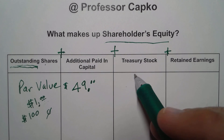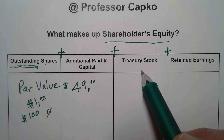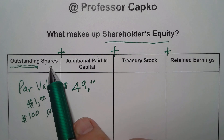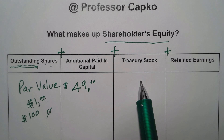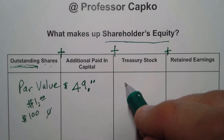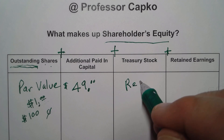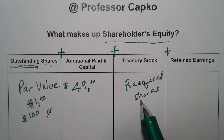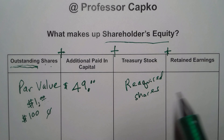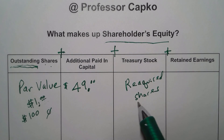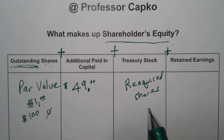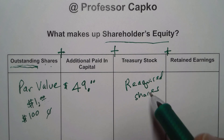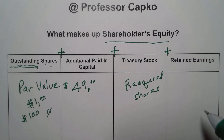Next, treasury stock. Treasury stock is any shares of stock that were at one point issued and outstanding but have since been purchased again and brought back into the company — these are reacquired shares. We'll talk in another video about how to account for treasury stock, as there are several different methods. So stay tuned for that, and if you're finding this information helpful, go ahead and subscribe and click the notification bell so you'll be aware of additional videos.